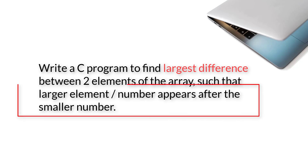But the second part of this problem statement is a little bit tricky. It's a condition to find the smallest element of the array. The larger element appears after the smaller number. So we need to find the smallest element in the range from index 0 to the position where the biggest element of the array appears.